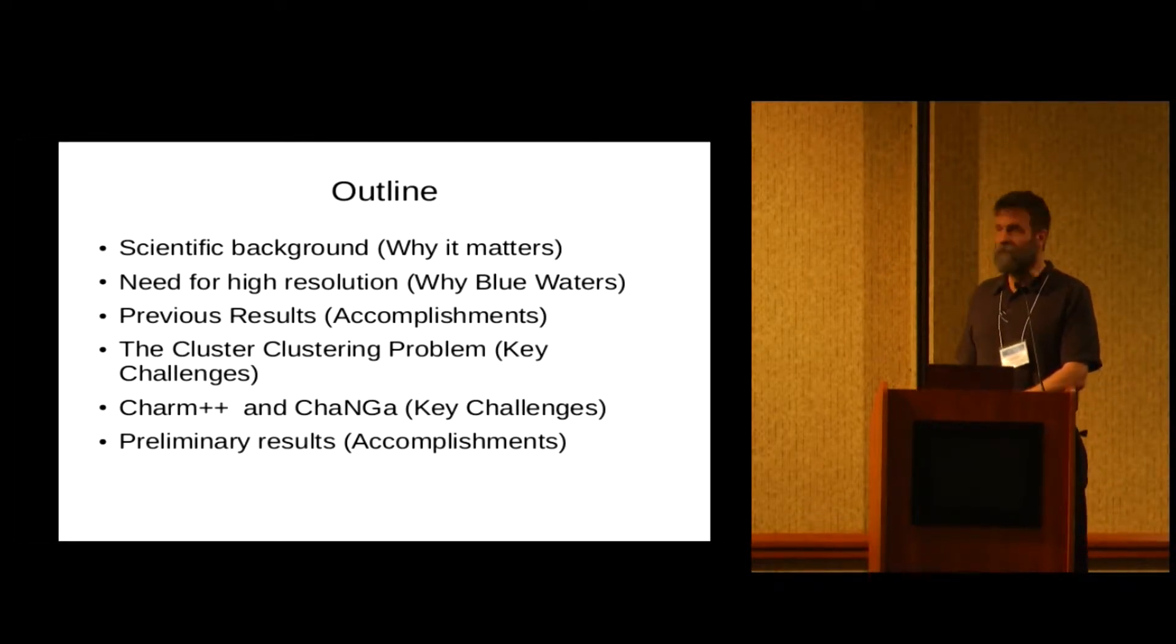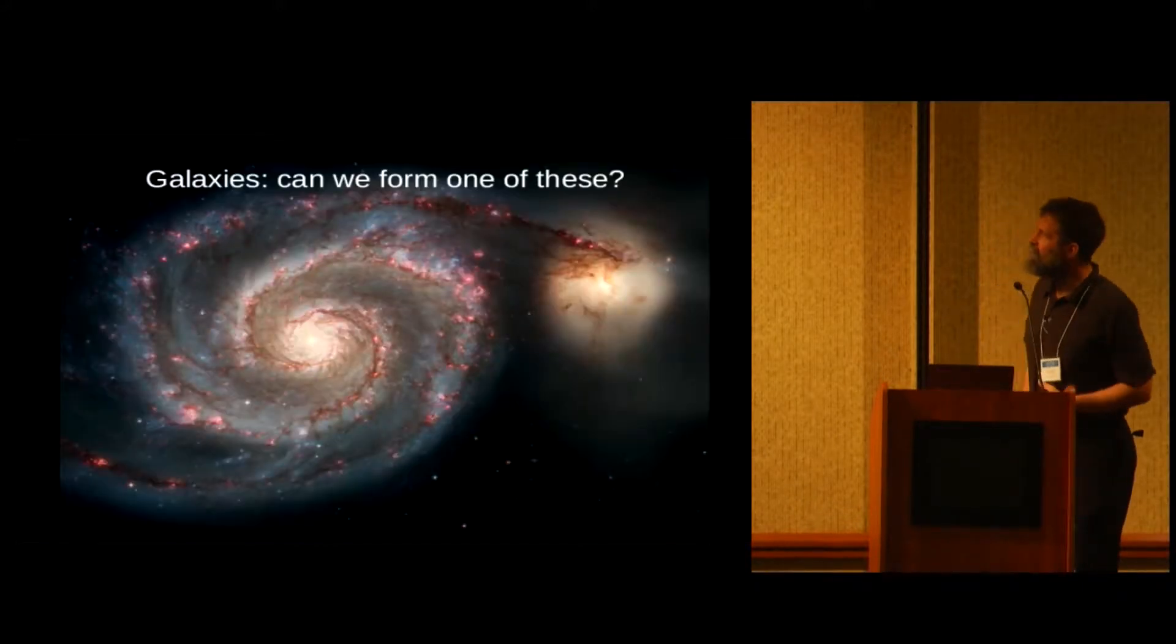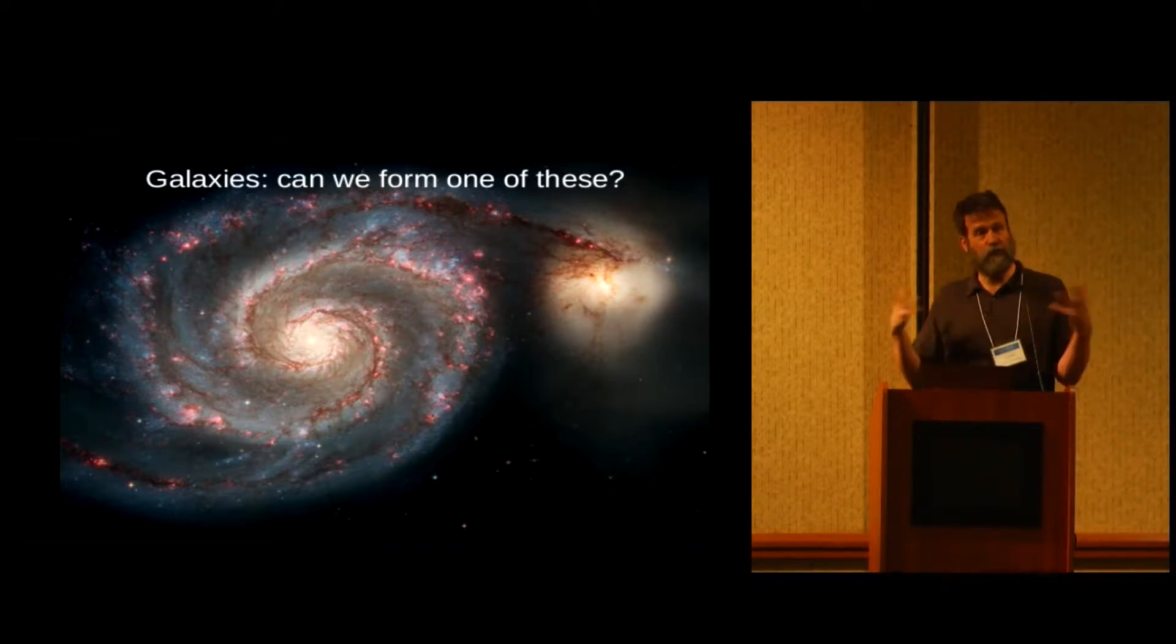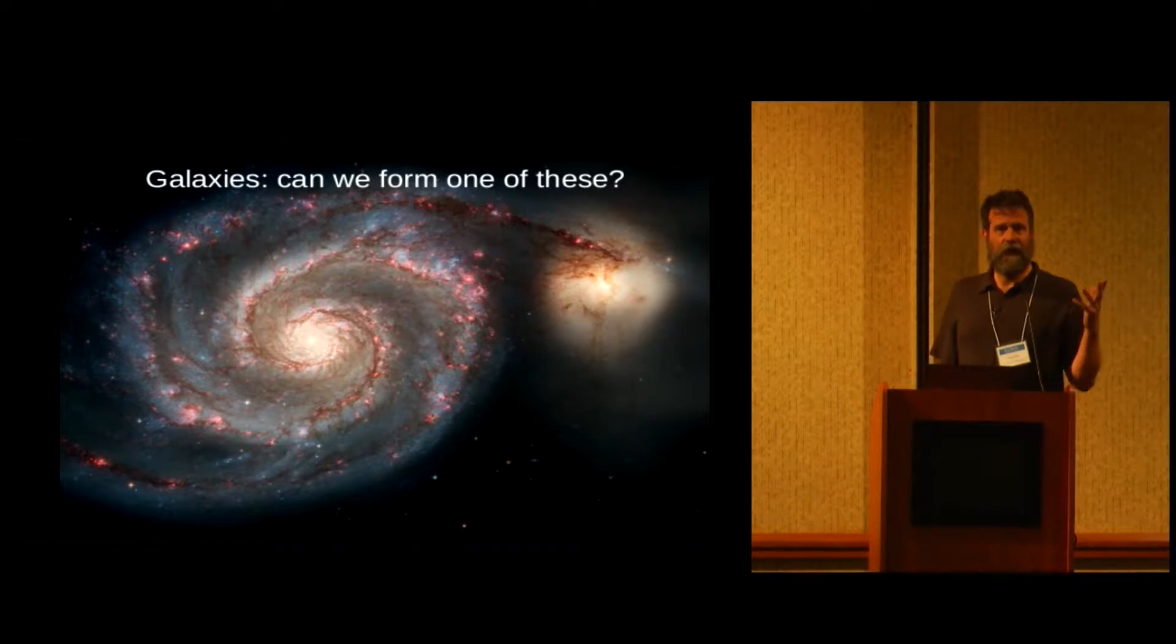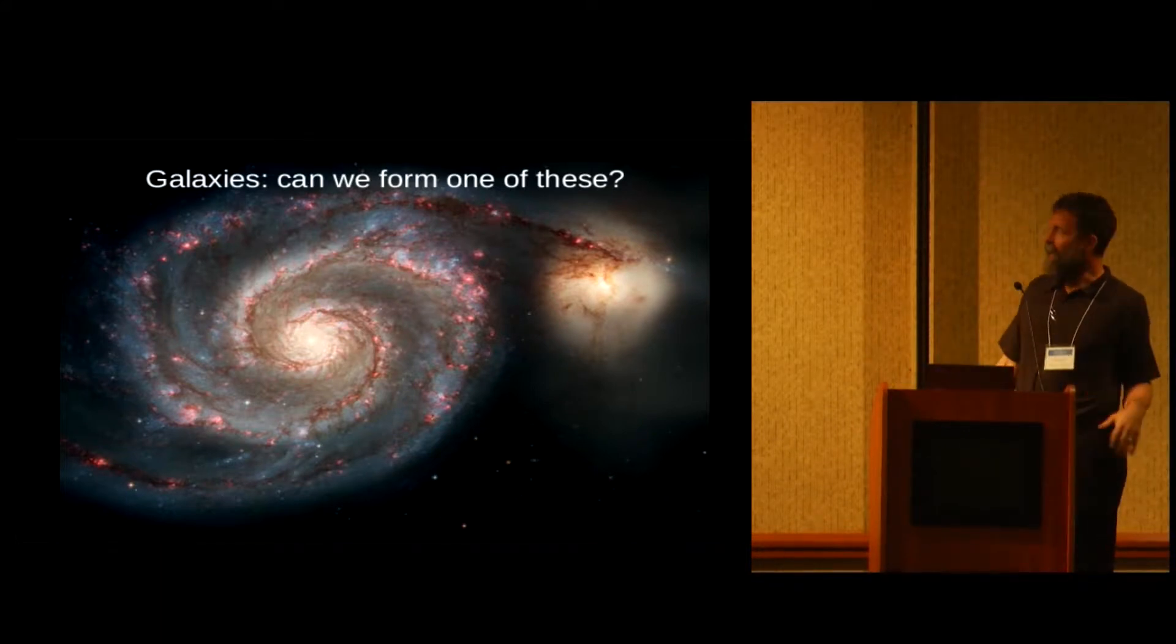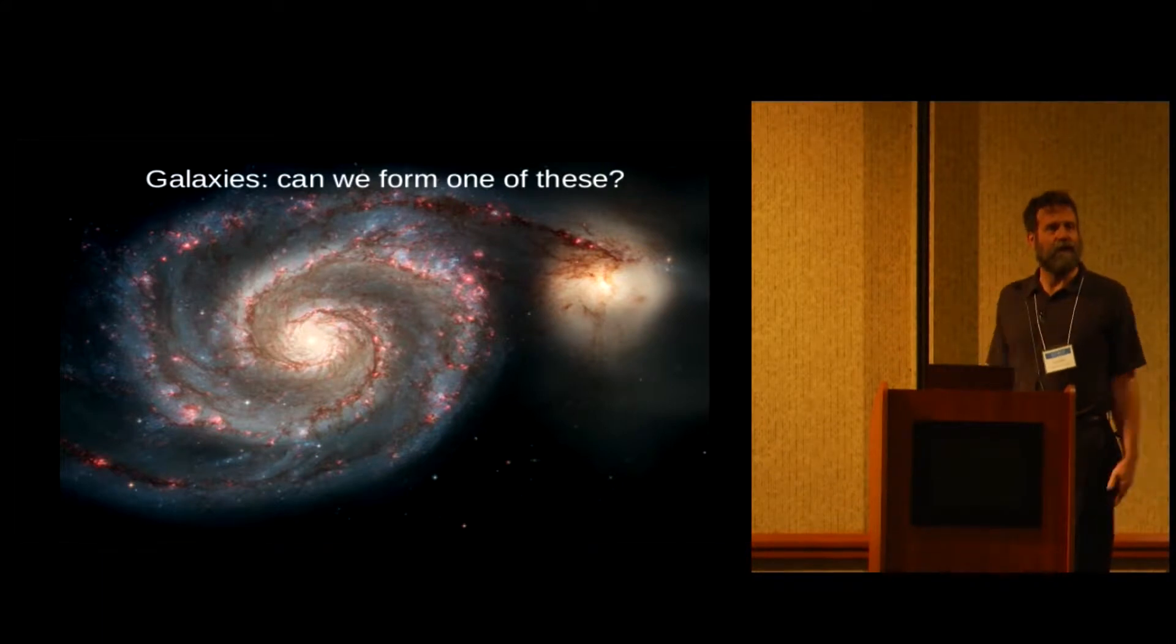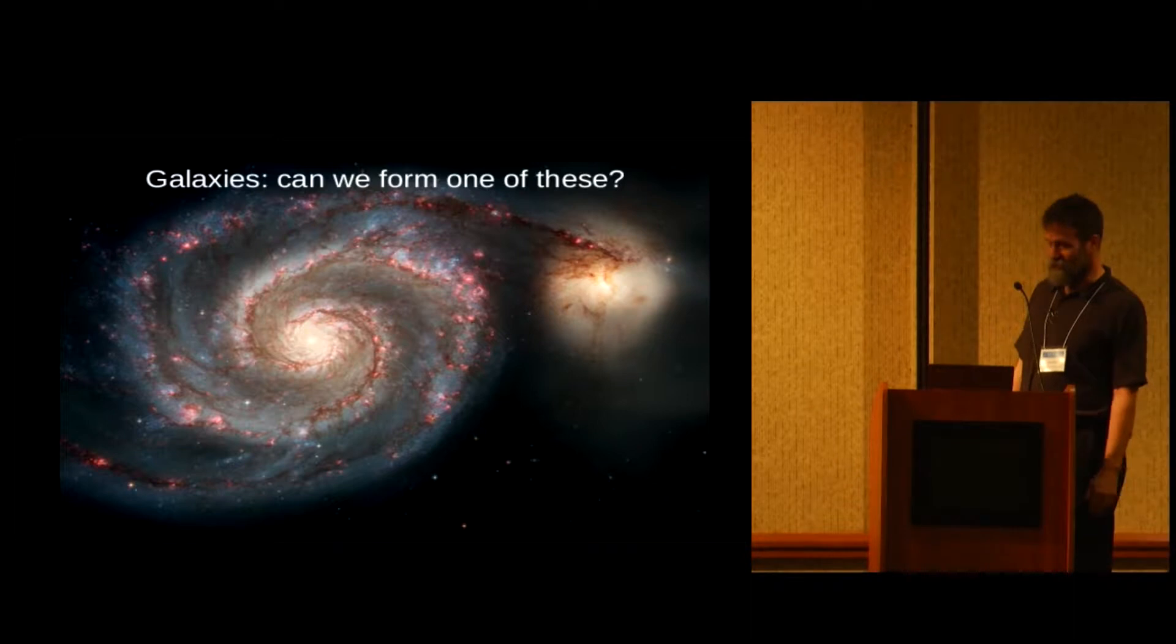So the problem of galaxy formation is to make one of these, and hopefully observing one of these will tell us about how dark matter is distributed. Professor Toth is in the audience, and the flatness of these spiral galaxies tells us about how clumpy the infall of dark matter is. He taught us about that a couple decades ago.